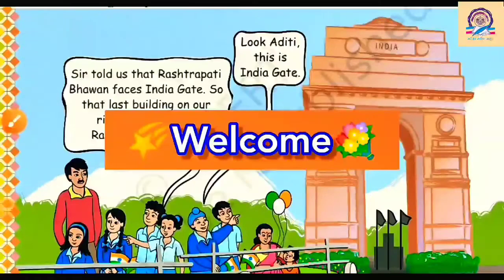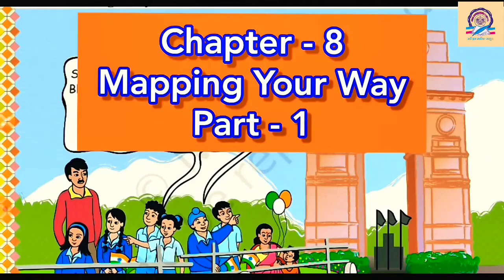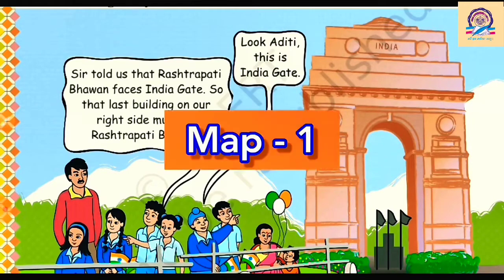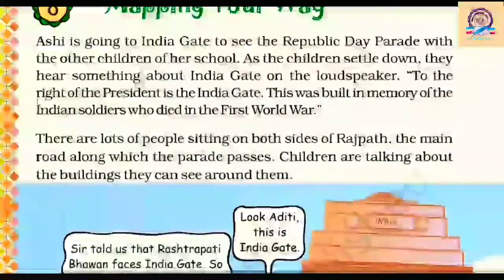Hello, welcome back to my channel. Today we are going to start with Part 1 of Chapter 8, 'Mapping Your Way.' In this chapter we are going to learn about maps and directions — how to read a map and its direction. In today's video we are going to study Map 1, which is based on Rashtrapati Bhavan, Rajpath and India Gate, and Map 2, which is based on the Central Hexagon.